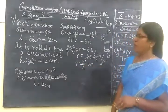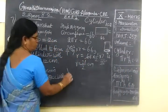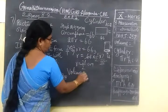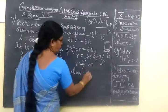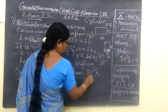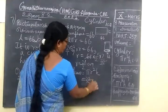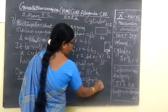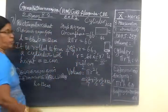Now, we have to find the volume. Volume of the cylinder. Equal to πr²h. Equal to 22 by 7 times 21 by 2, 21 by 2, 21 by 2. h is 12.